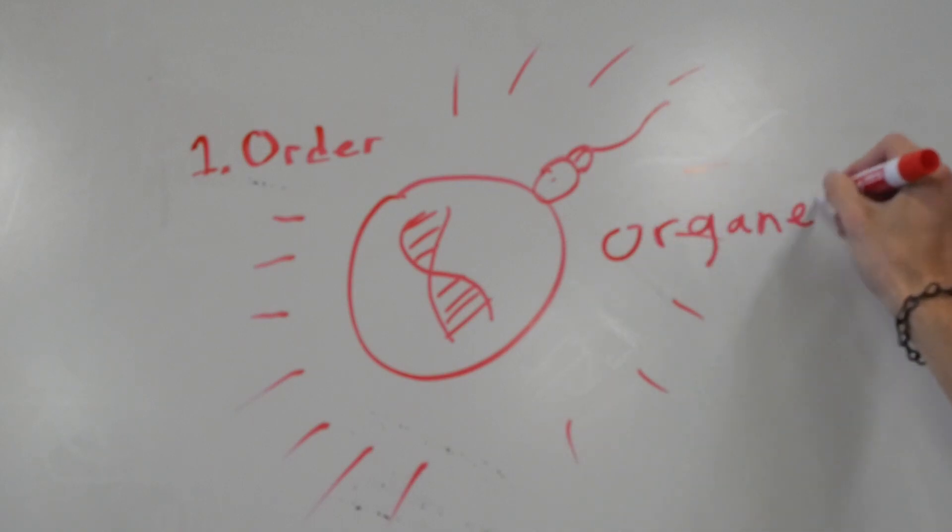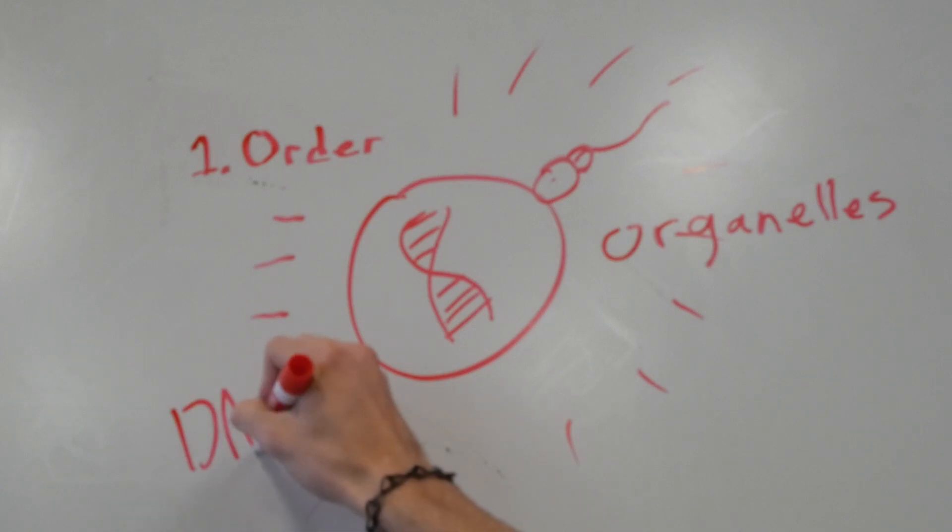If this isn't enough order, what if I were to tell you that this one cell has its own system of code, DNA. The genetic material in our cells is nothing more than strands of code.